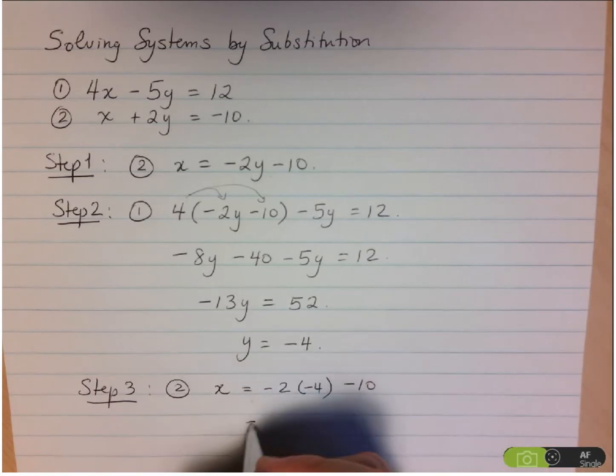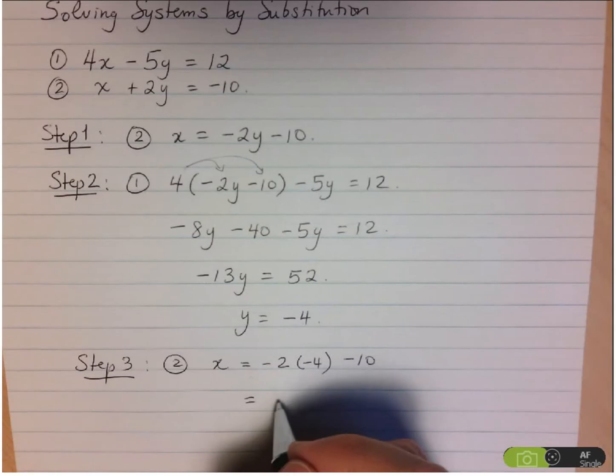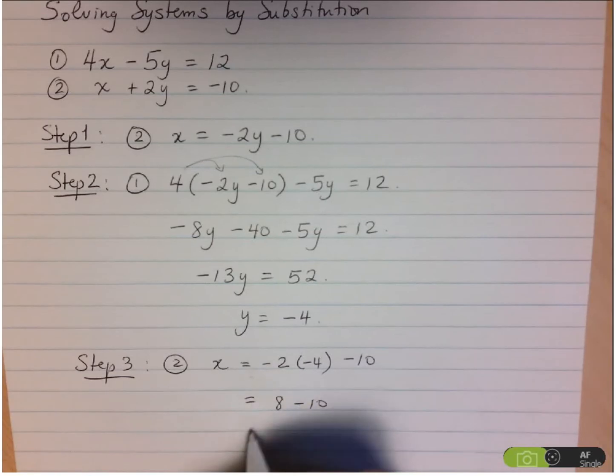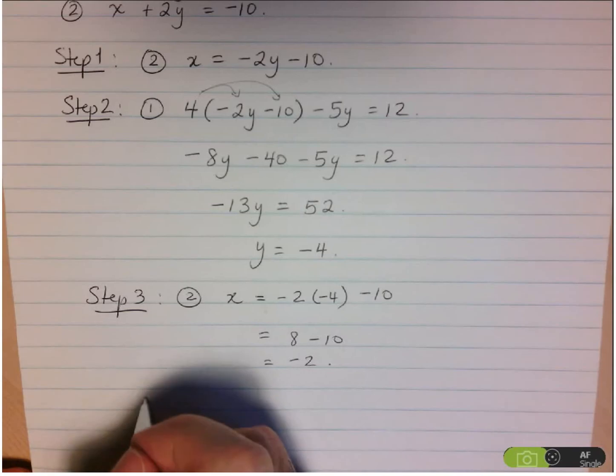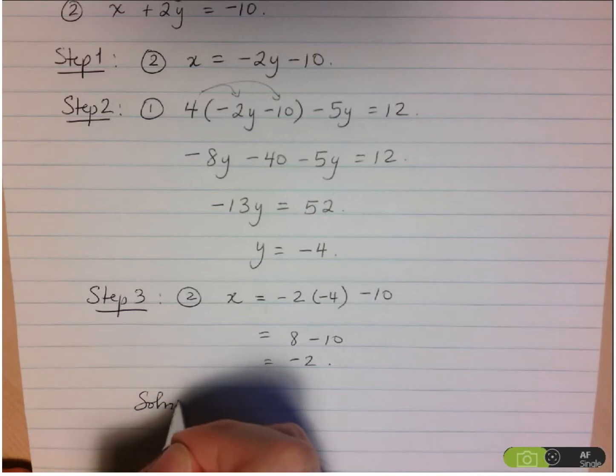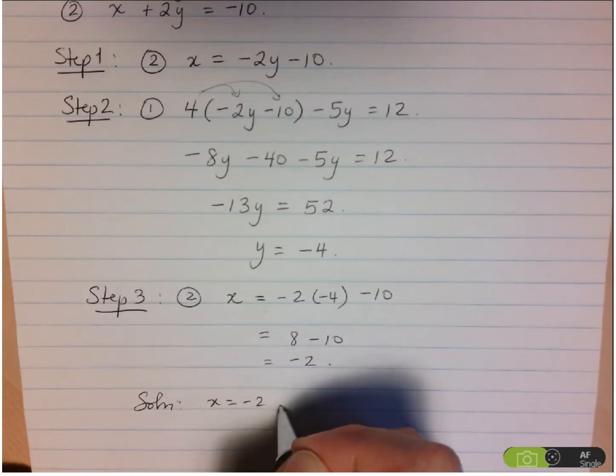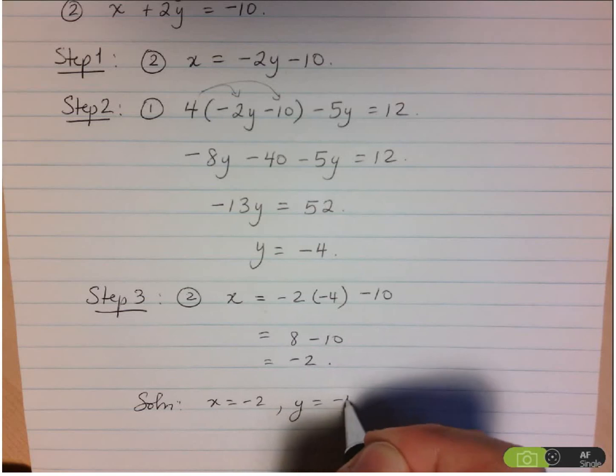So here we have, that's negative 2 times negative 4 is positive 8 minus 10. And that's negative 2. So the solution is x equals negative 2 and y equals negative 4.